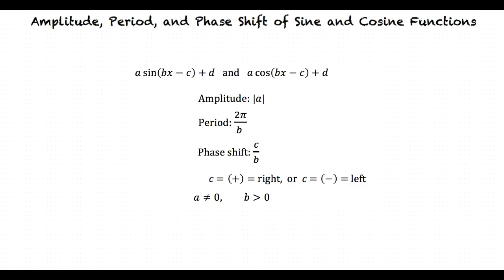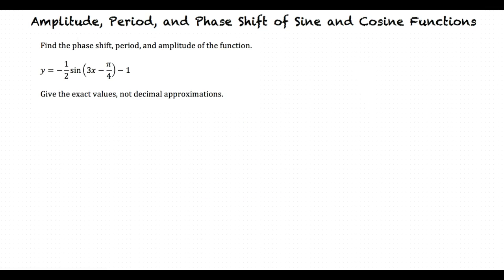Let's do an example. Find the phase shift, period, and amplitude of the function: y equals negative one-half sine of 3x minus π fourths minus 1. Give the exact values, not decimal approximations.